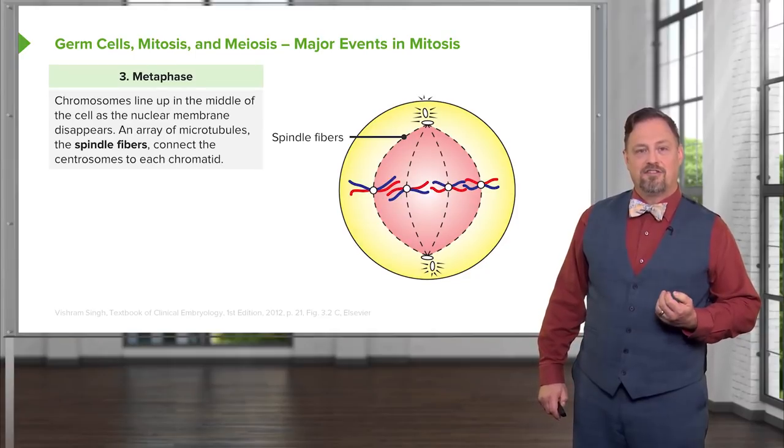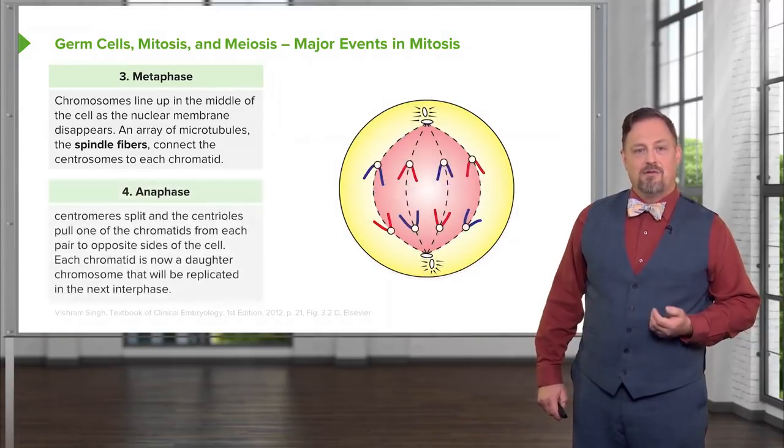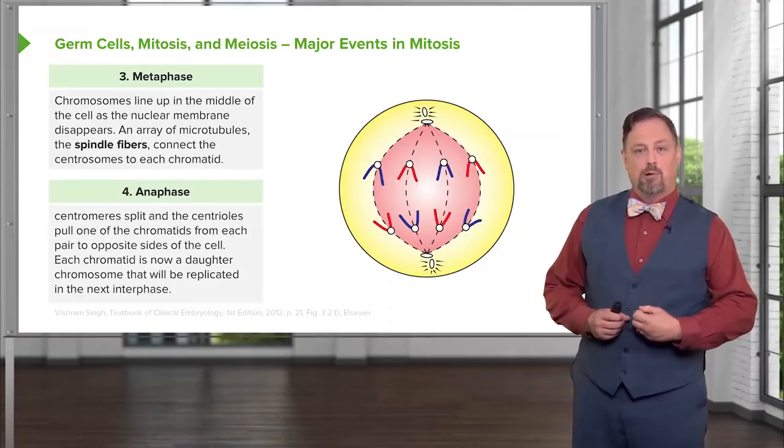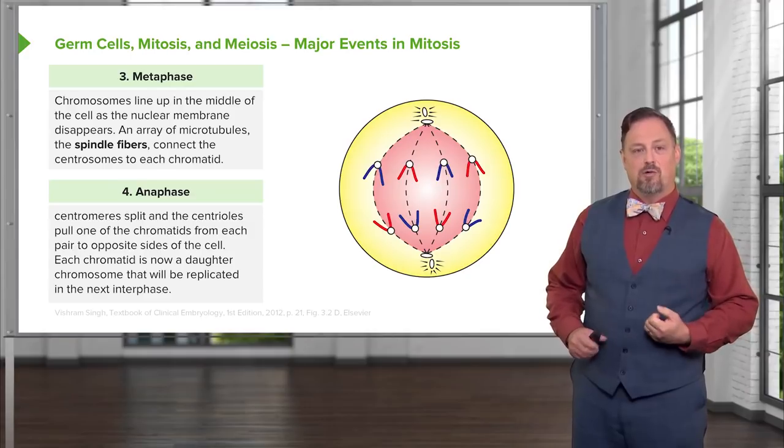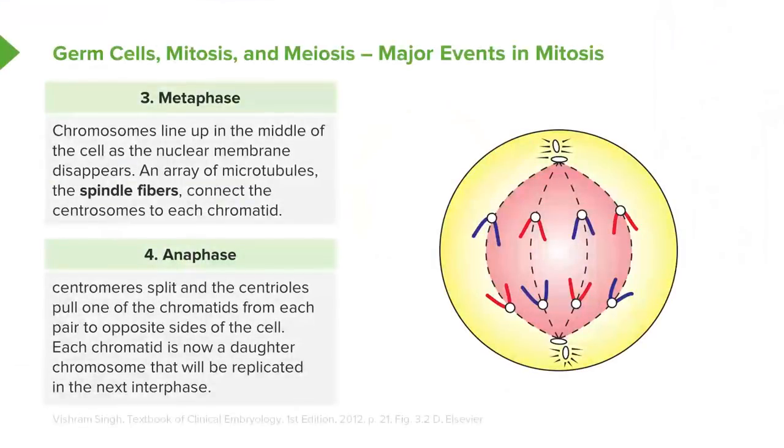They connect to the centrosomes and then during anaphase, they pull each chromosome, one pair, to one side of the cell or the other. So the centrosomes are going to split the chromosomes to either side of the nucleus during anaphase.